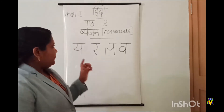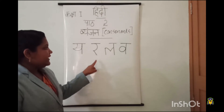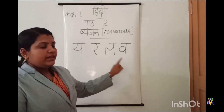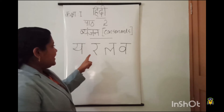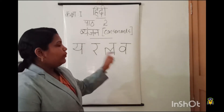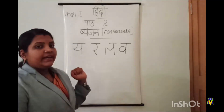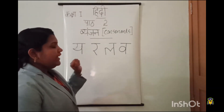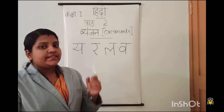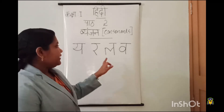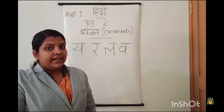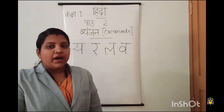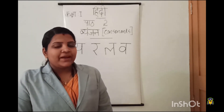So children, let me repeat: ya, ra, la, wa. Say with me: ya, ra, la, wa. Ya say yaan, yaan means aeroplane. Ra say raja, raja means king. La say ladka, ladka means boy. Wa say wak, wak means crane. Very good.